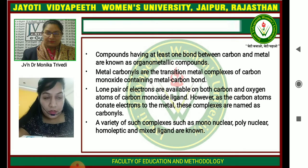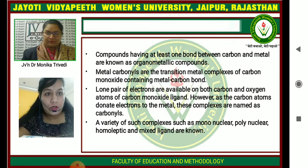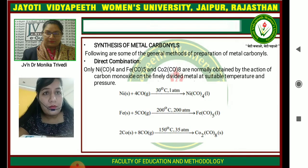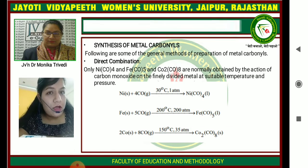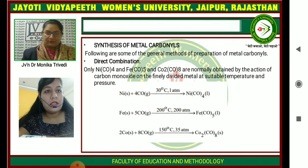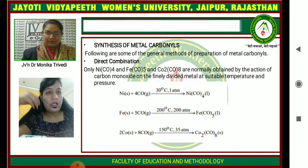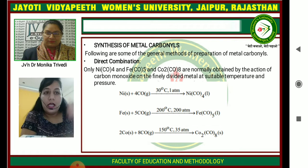These kinds of compounds are generally known as mononuclear, polynuclear, homolytic, and mixed ligand carbonyls. For the synthesis of carbonyls, the ligand and metal combine to make a carbonyl compound. The direct combination of metal and the CO ligand will give the carbonyl compound.